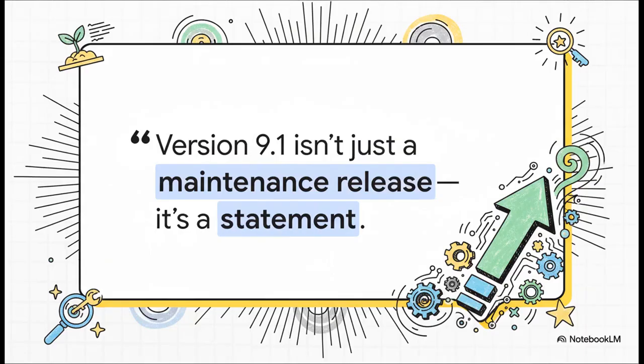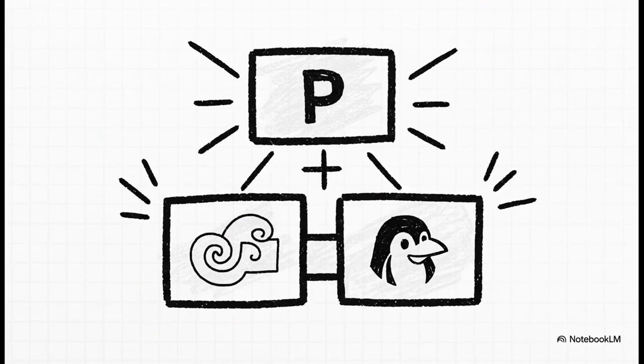Right off the bat, the source material hits us with a quote, and honestly, it nails it. This isn't your average bug-fix patch — this is Proxmox making a statement. They've packed this release with some really meaningful, platform-shifting improvements. Proxmox 9.1 is sitting on top of the rock-solid Debian 13.2, also known as Trixie, and it's shipping with the new, very powerful, and as we'll find out later, slightly tricky Linux kernel 6.17.2. This modern foundation is what makes all the cool new features possible.